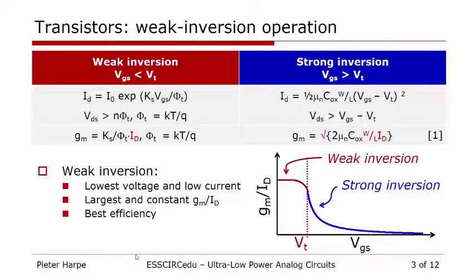A second advantage is that the transconductance, or GM, of a transistor in weak inversion is higher compared to strong inversion if you assume the same bias current ID. This is what you can see in the graph below. As a result, the power efficiency of circuits in weak inversion is improved.